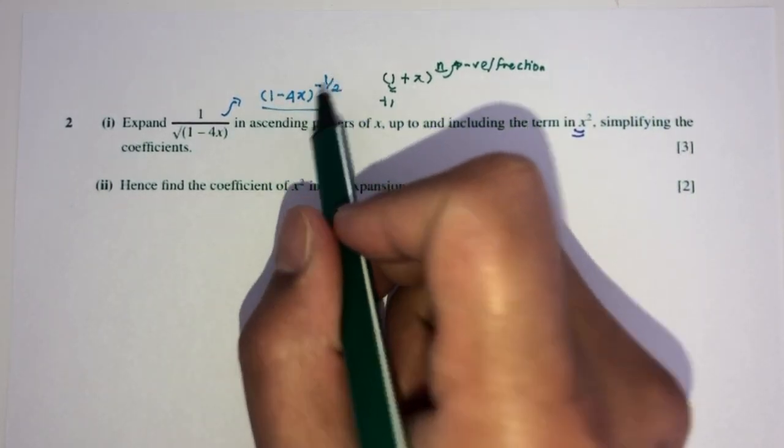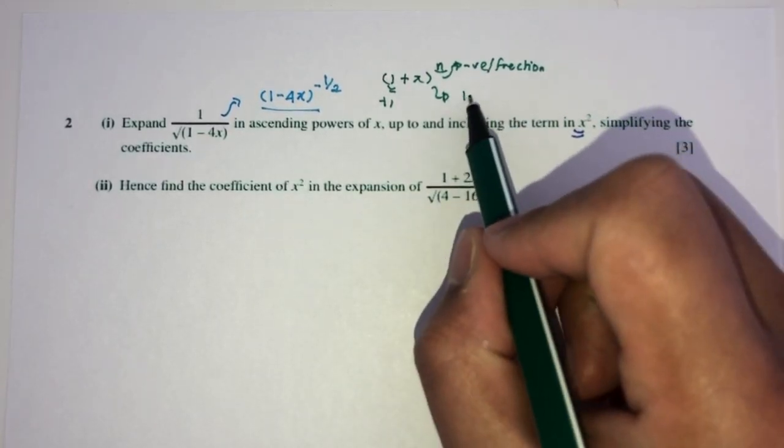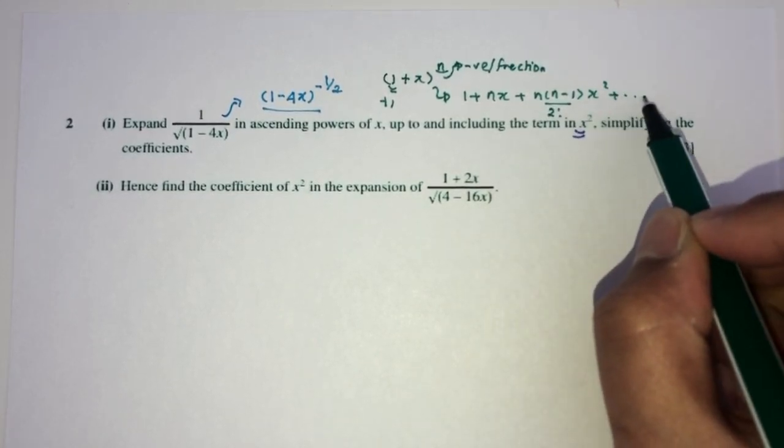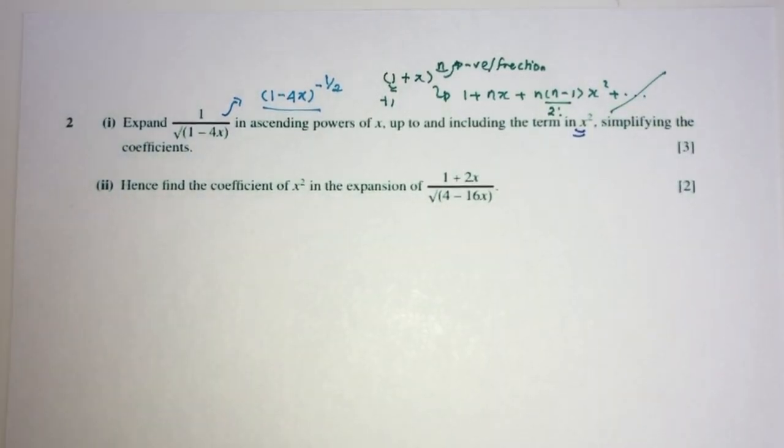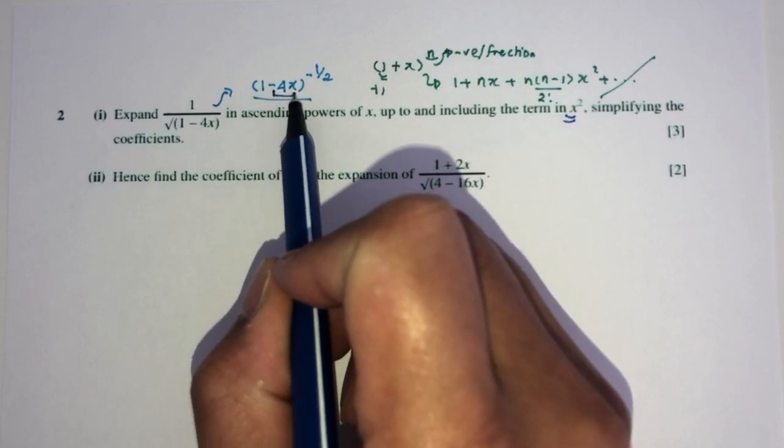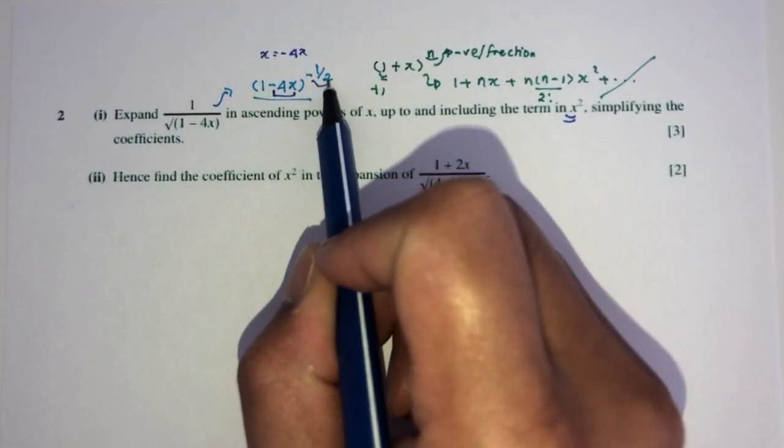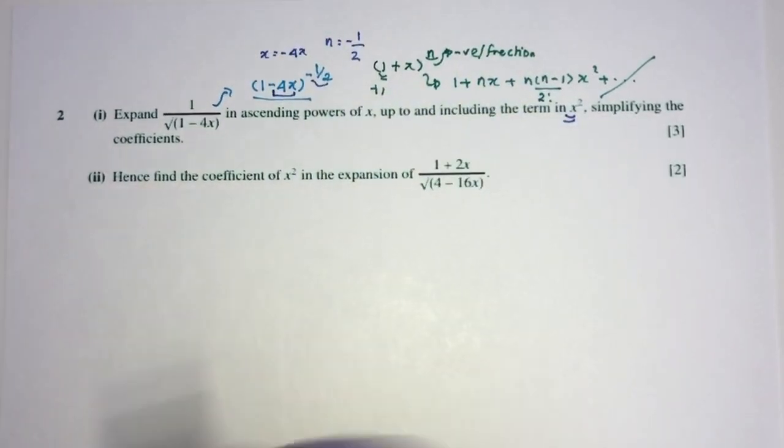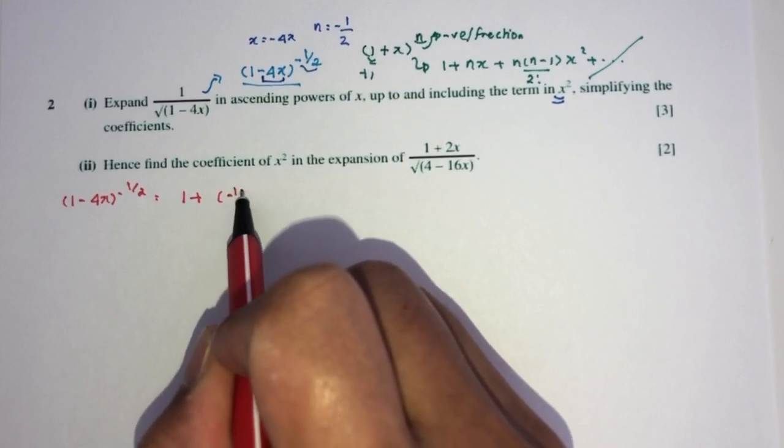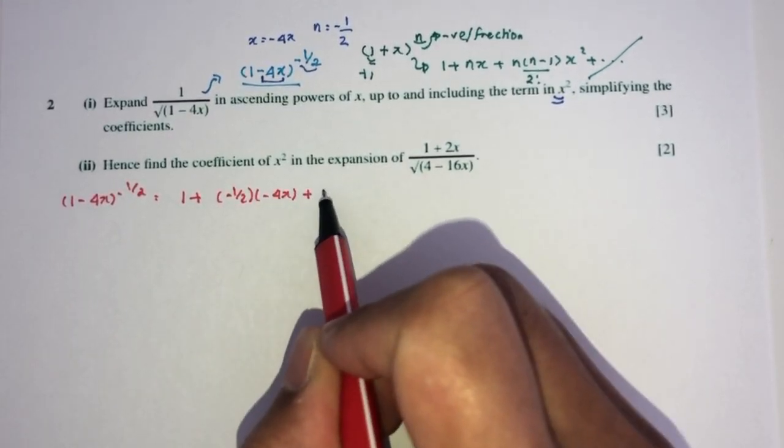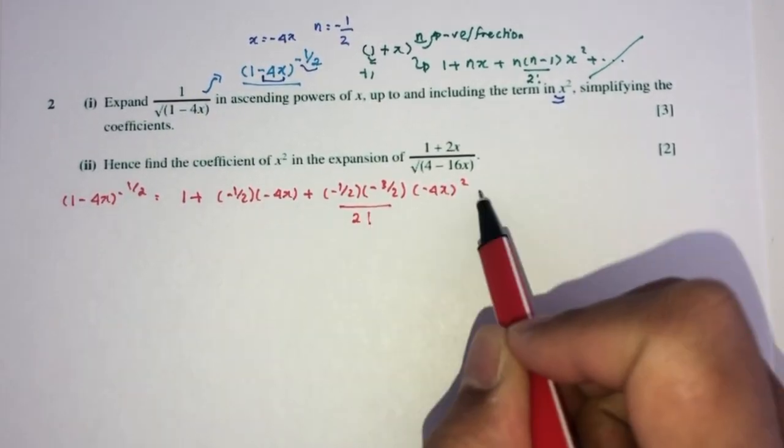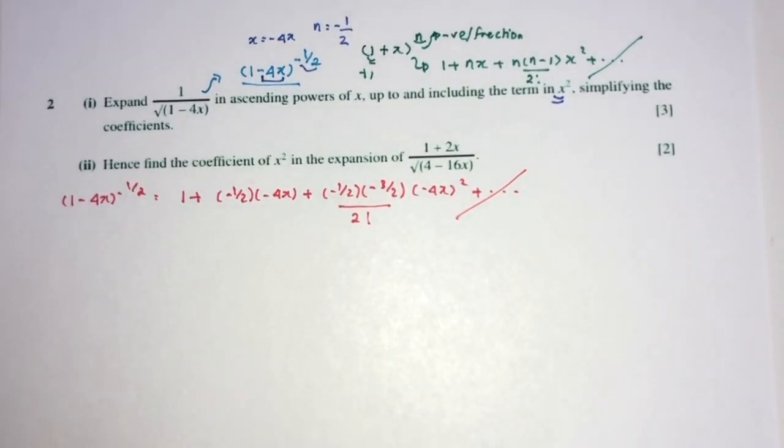Now we confirm this is plus 1, and this is a fraction or negative. So we can use the formula pretty easily. It is 1 plus nx plus n times n minus 1 times x squared divided by 2 factorial. We can stop right here because we only need until x squared. This is plus 1. This is our x, which is 4x in the formula. And n is the value of minus half in the formula. Let's replace one by one. Here we have 1 minus 4x power minus half. That will be 1 plus n times minus 4x. Plus n will be minus half. Minus 1 will be minus 3 over 2. x squared divided by 2 factorial. We don't need to go further than this because we only need until x squared.